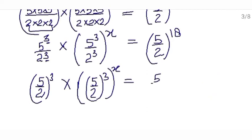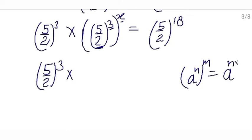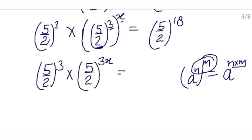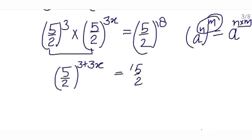This equals 5 upon 2 raised to the power 18. Now this is 5 upon 2 raised to the power 3, in the form of a raised to the power n raised to the power m, so we simply multiply the powers: 5 upon 2, power 3x. Equals 5 upon 2 raised to the power 18. Now solve this part — we are multiplying them so powers will be added: 5 upon 2 raised to the power 3 plus 3x, equals 5 upon 2 raised to the power 18.